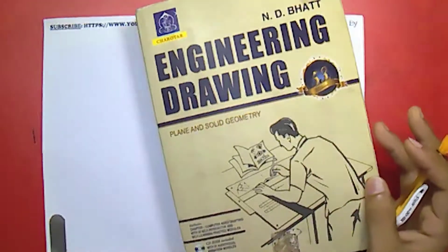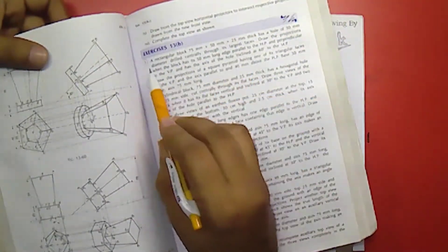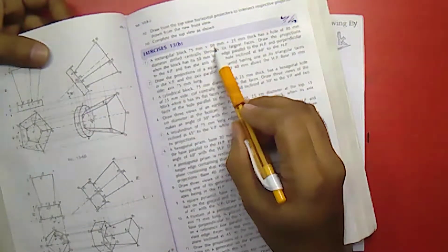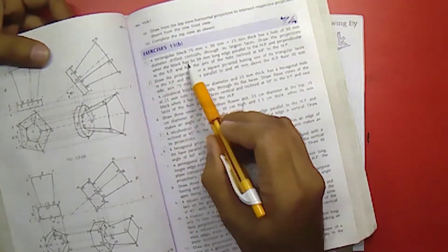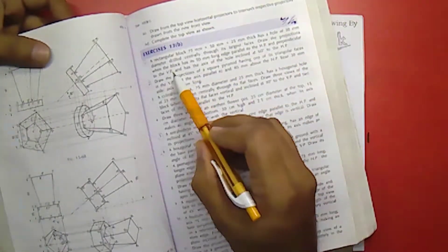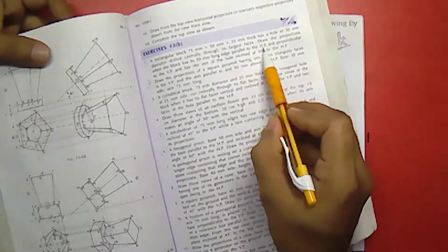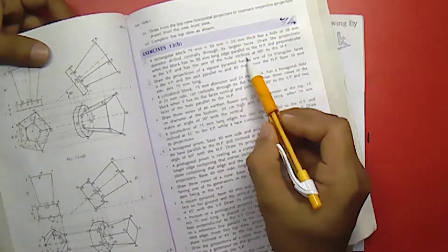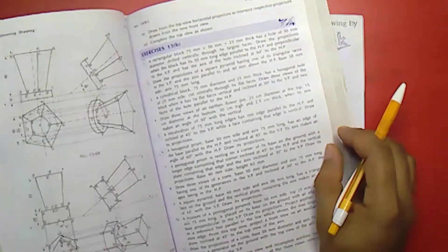I am considering the ND-Budd textbook, exercise number 13B, problem 1, where a rectangular block of 75mm by 55mm by 25mm thick has a hole of 30mm diameter drilled centrally through its largest face. Draw the projections when the block has 50mm long side parallel to HP and perpendicular to VP and it has an axis of hole inclined at 60 degrees to the HP. So for this question we are going to solve the problem today.